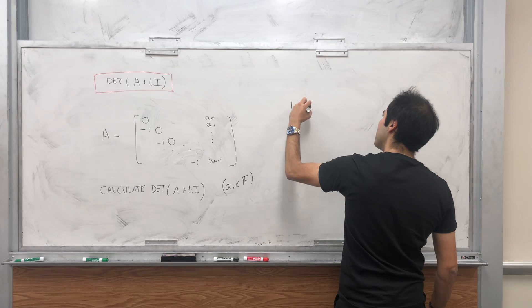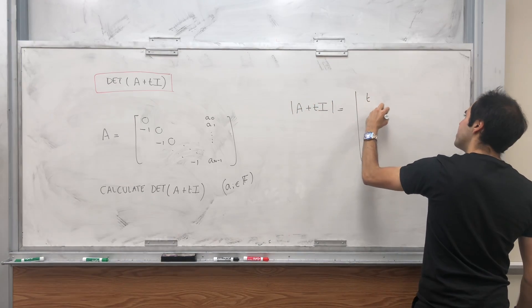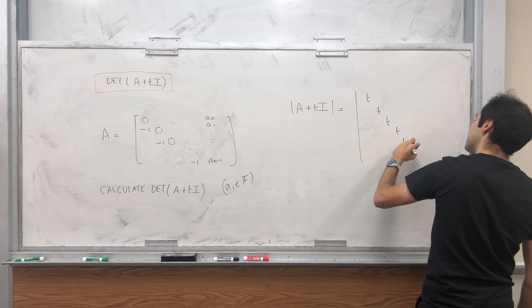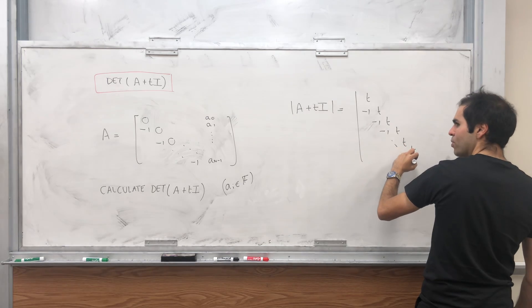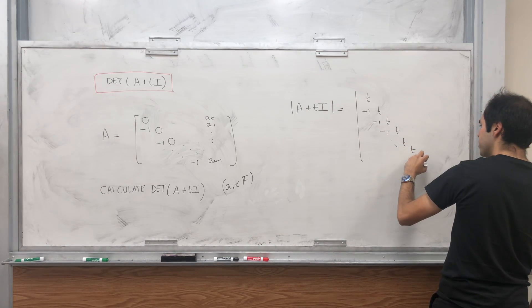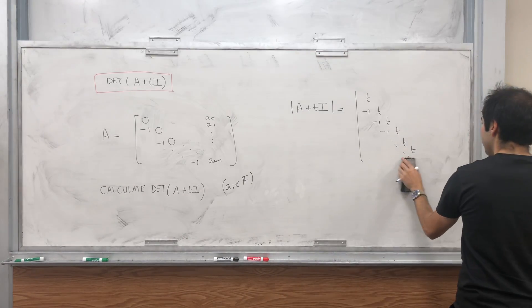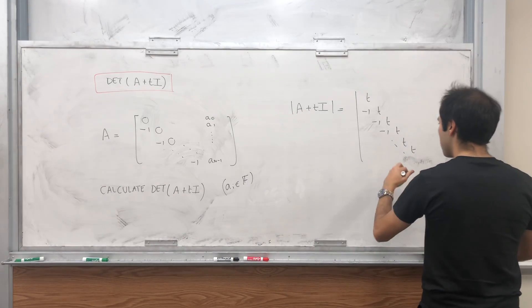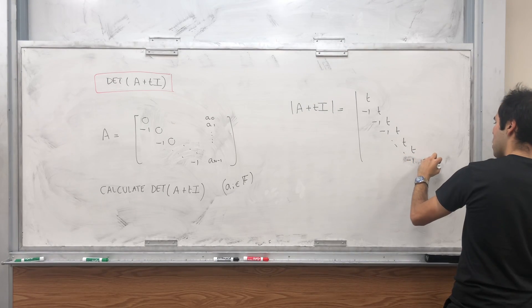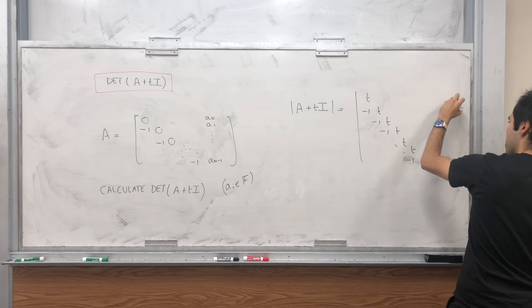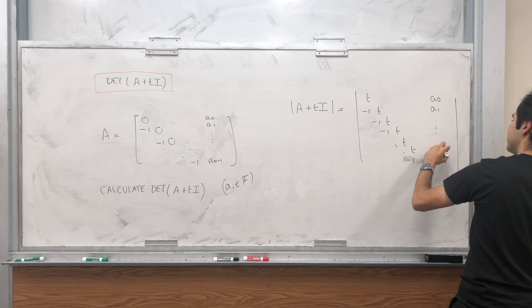So let's calculate A plus TI, which is just T, T, everything there's a T, and minus 1, minus 1, minus 1, bunch of minus 1's up to here. Sorry, there's a minus 1 here below. And if you want, A_{n-1} plus T. And this is A_0, A_1, up to A_{n-2}.